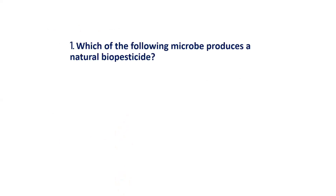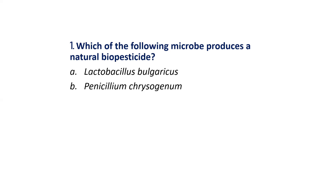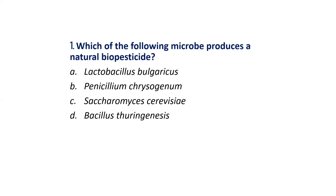MCQ 1: Which of the following microbes produces a natural biopesticide? Options are: Lactobacillus bulgaricus, Penicillium chrysogenum, Saccharomyces cerevisiae, Bacillus thuringiensis. The correct answer is Option D: Bacillus thuringiensis.